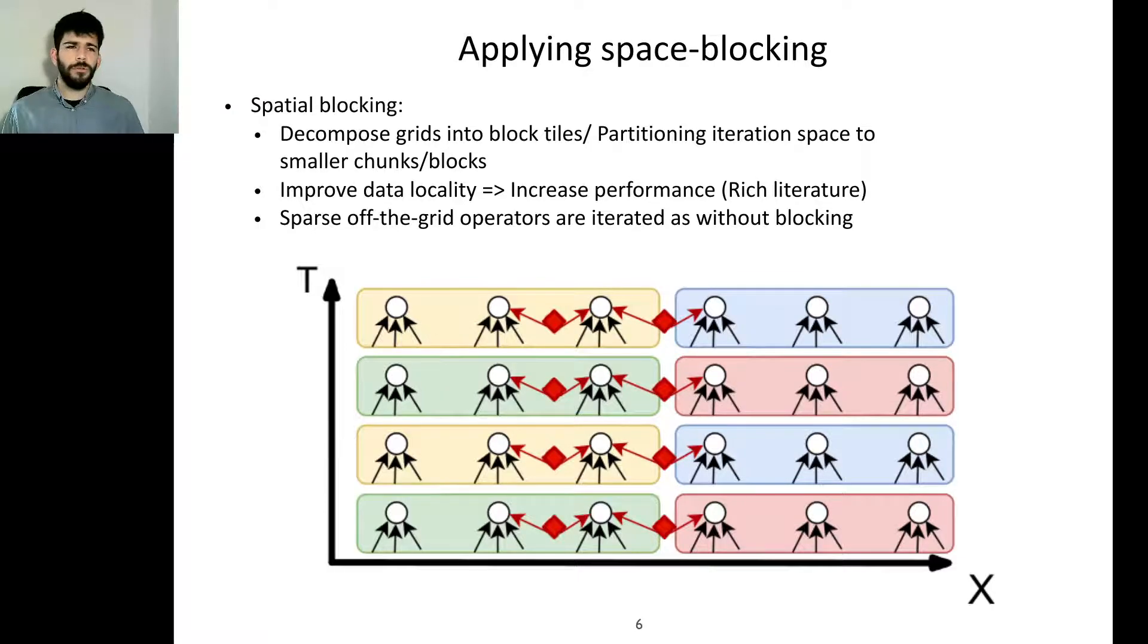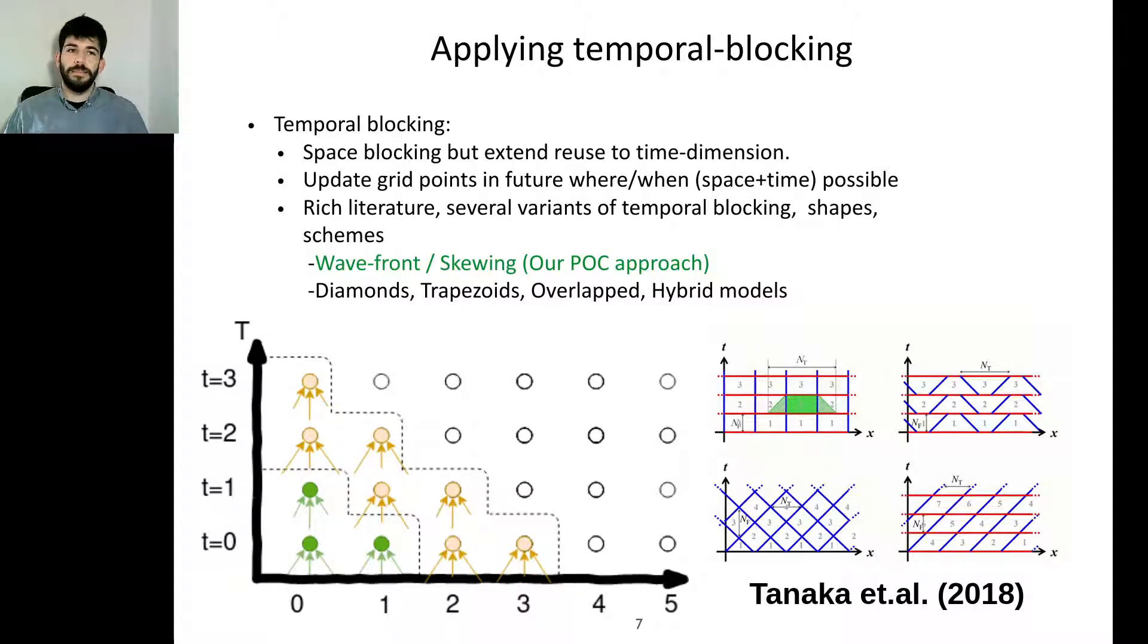Applying cache optimizations to these structures is straightforward for cases such as space blocking because we just decompose the grid into block tiles. Data locality is improved and there are no problems because applying the source impact after the stencil update has been executed, there are no data dependencies that complicate this schedule. However, in the case where we have temporal blocking, it's a cache optimization extended to time dimension.